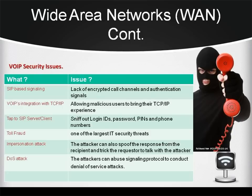VoIP security issues: SIP-based signaling suffers from a lack of encrypted calls, channels, and authentication signals. Hackers can tap into the SIP server-client communication to sniff out login IDs, passwords, sensitive data, and phone numbers, and then impersonate users. The attacker can also spoof responses from the recipient and trick the requester into talking with the attacker, as shown in the image. In a DOS attack, attackers can abuse signaling protocols to conduct denial-of-service attacks. Hackers can intercept incoming and outgoing calls, carry out DOS attacks, spoof phone calls, and eavesdrop on sensitive conversations.